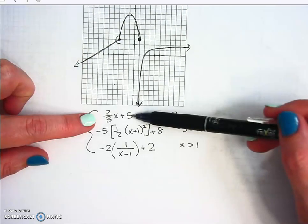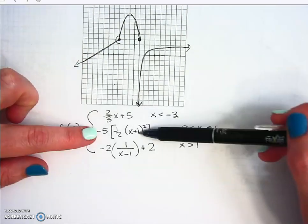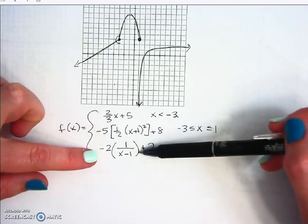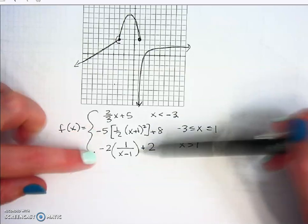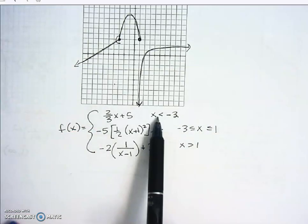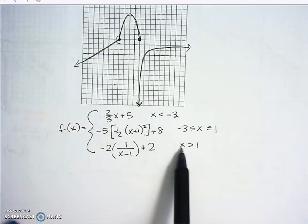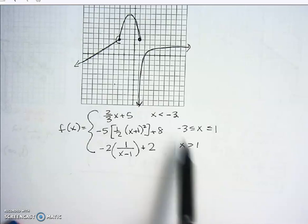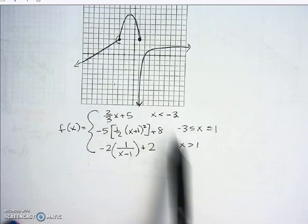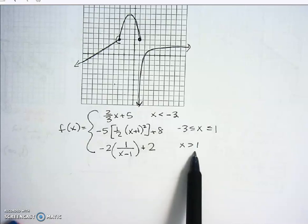The last piece is the one-over-x vertical stretch form with domain one to infinity. Writing left-to-right pieces top-to-bottom preserves the least-to-greatest order of the domain restrictions, which is the standard convention for piecewise function notation.